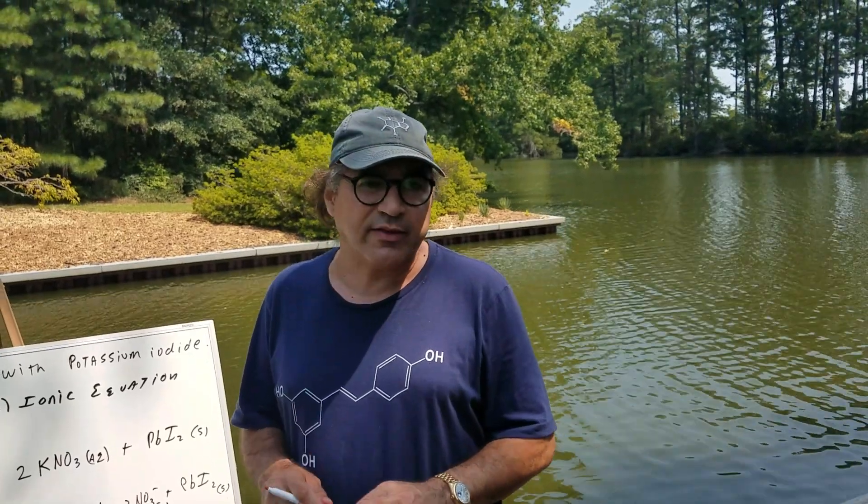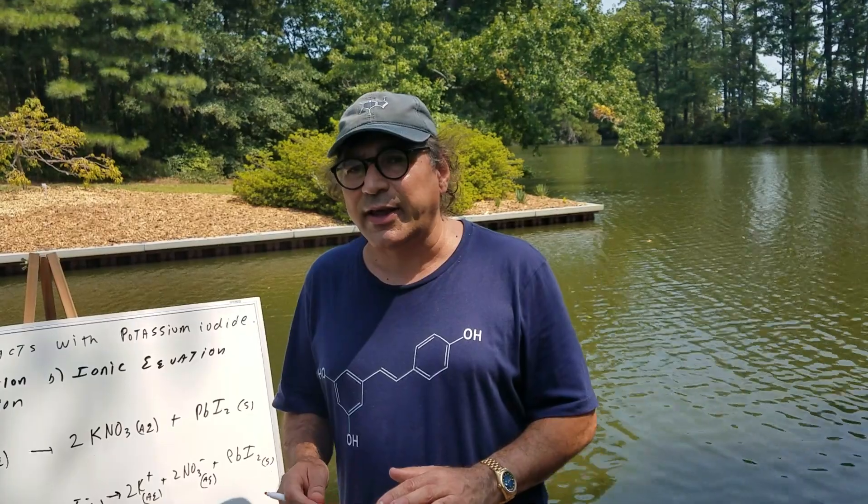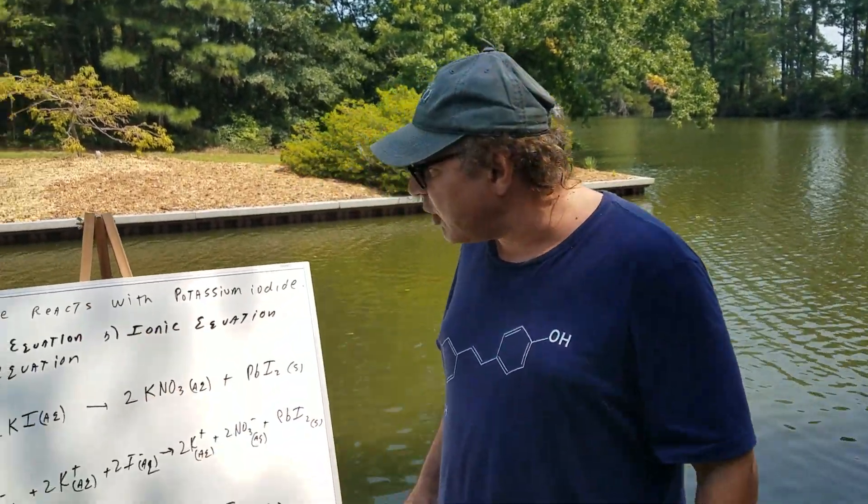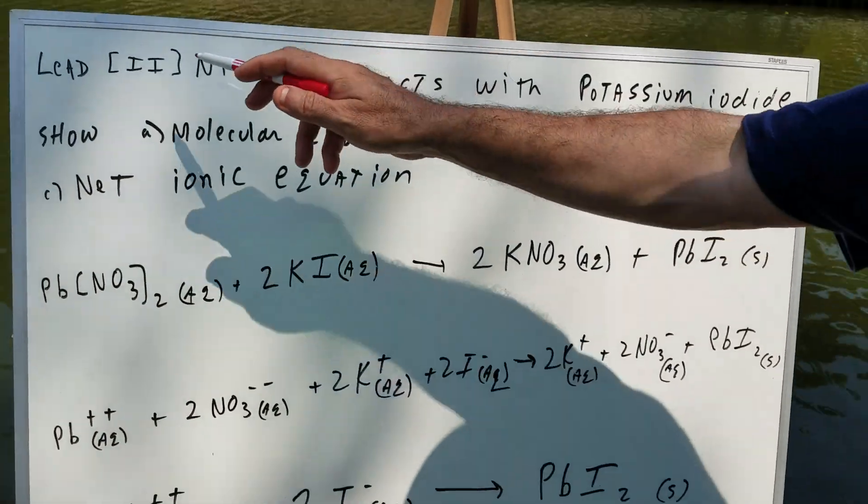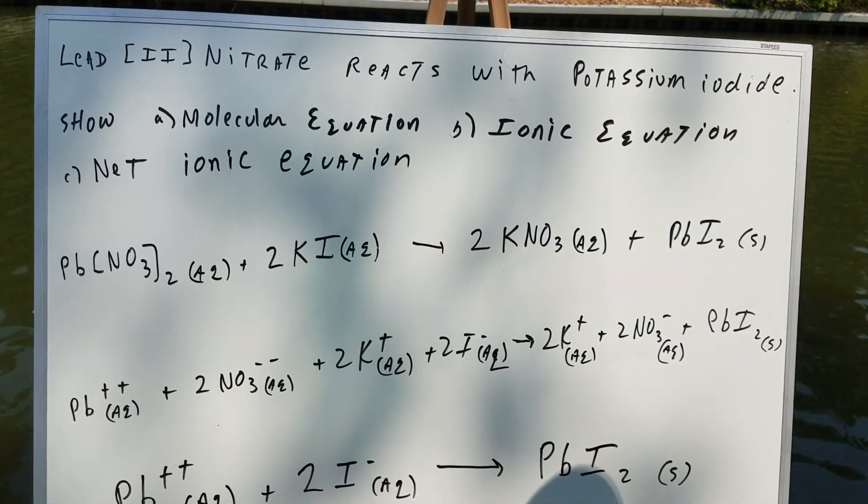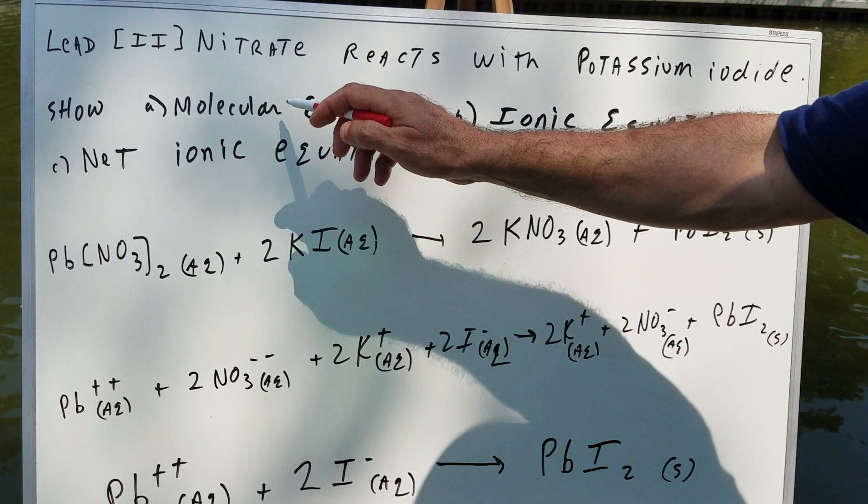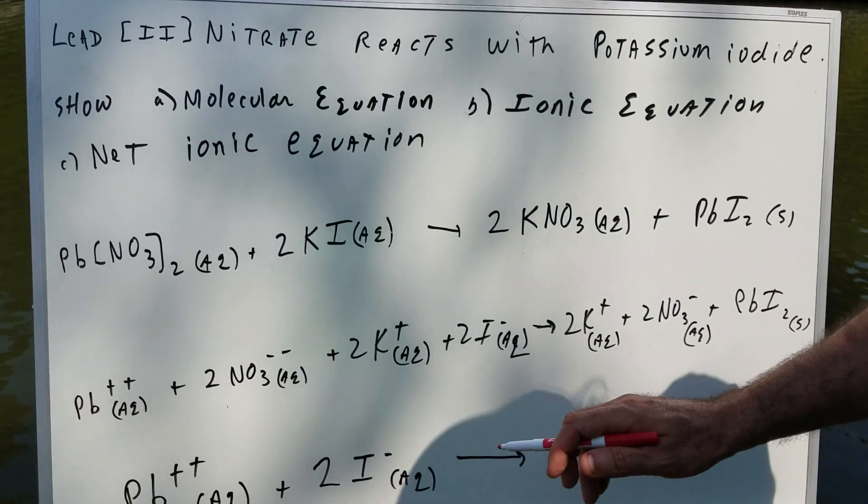Now what we're going to do is there's three types of equations: there's the molecular equation, the ionic equation, and then finally the net ionic equation. So let's have a look at a concrete example. We're going to take lead II nitrate and react it with potassium iodide. And what I want to do is to show what's called the molecular, the ionic, and the net ionic equation.